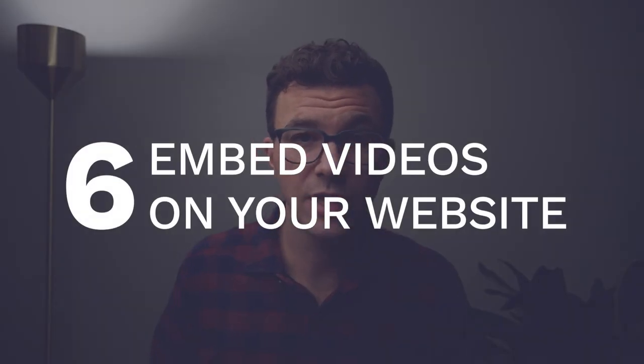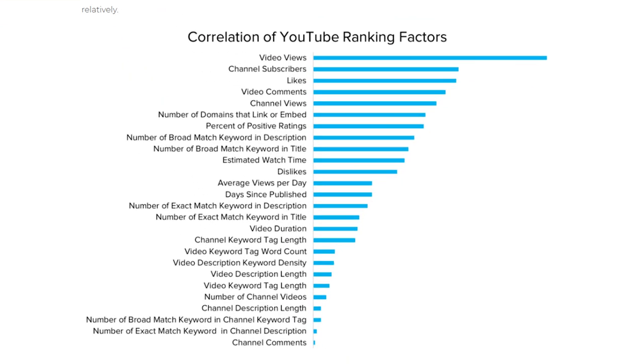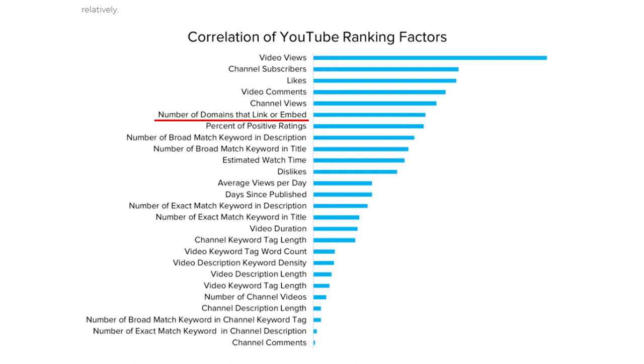Tip number six: embed your videos on your website. A study done by Briggsby found that the number of times a video was embedded or linked to correlated very highly to that video's ranking on YouTube. This is similar to backlinks in general SEO — the more backlinks content has, the higher it ranks. You can do this a couple of different ways: have a video version and a text version of content on your website, or embed videos as parts of larger sections. For example, in a YouTube SEO article you could embed the YouTube SEO video, and also embed a separate YouTube tags video within the relevant section.